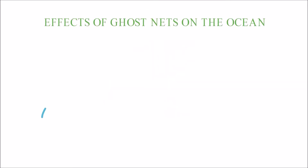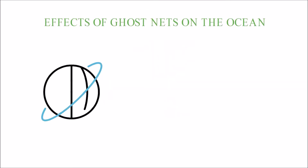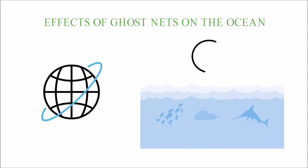Effects of Ghost Nets on the Ocean. Ghost nets are a global problem. The world's oceans are full of old fishing nets that have been left behind. These nets have a negative effect on marine biomes in a number of ways.